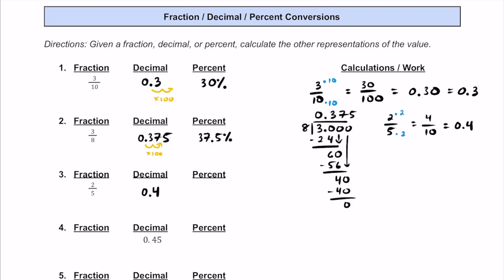Now that's the decimal. If you want to turn this into a percent, let's multiply it by 100. If we do that, we have to add a 0 here. So this is going to be 40%.